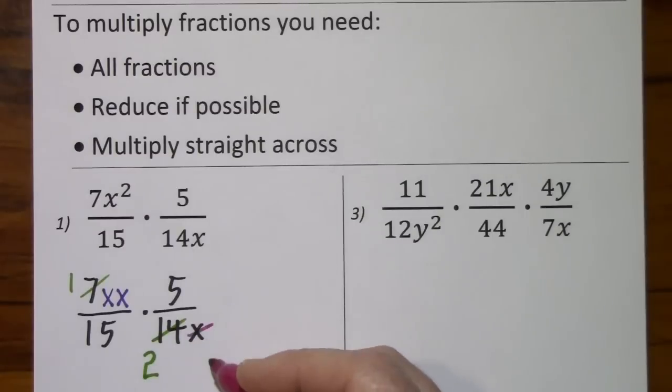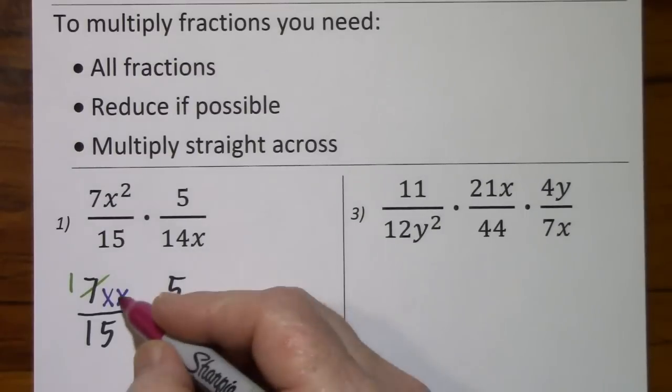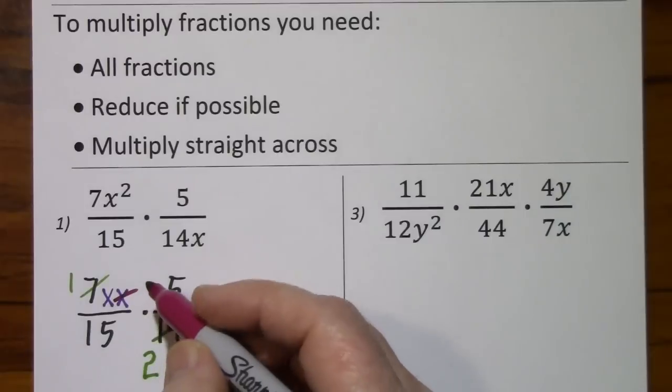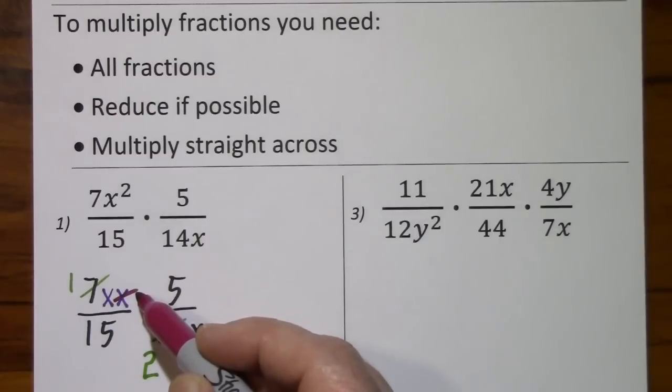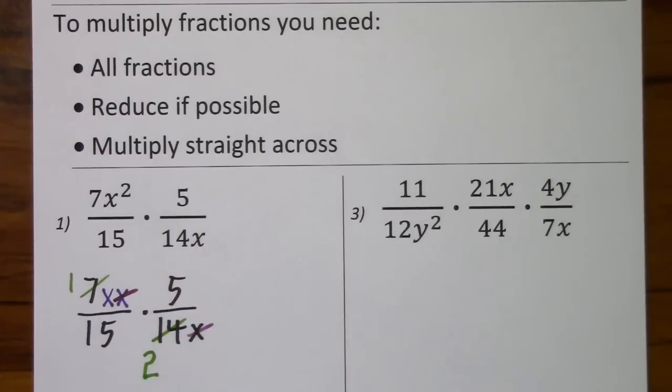x divided by x is 1, but I don't want to write it because it gets too cluttered. x divided by x is 1. It's going to be easier to just say x cancels x, and that's how I'll be saying it from now on.